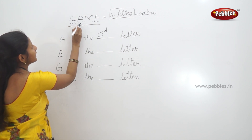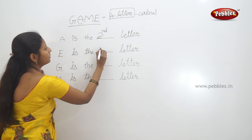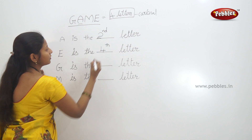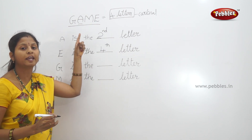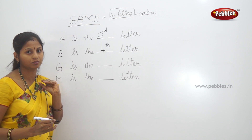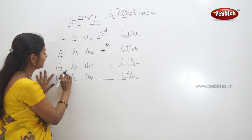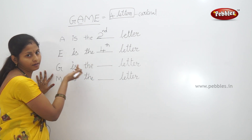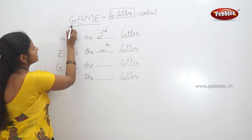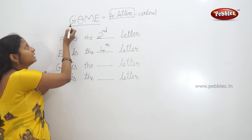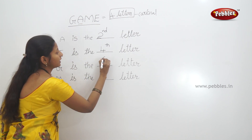First, second, third, fourth — that is the fourth letter. The game is a word, it is a position. G is the next letter — G is a position. G is the first letter, the starting letter. So G is in the first position — first place.